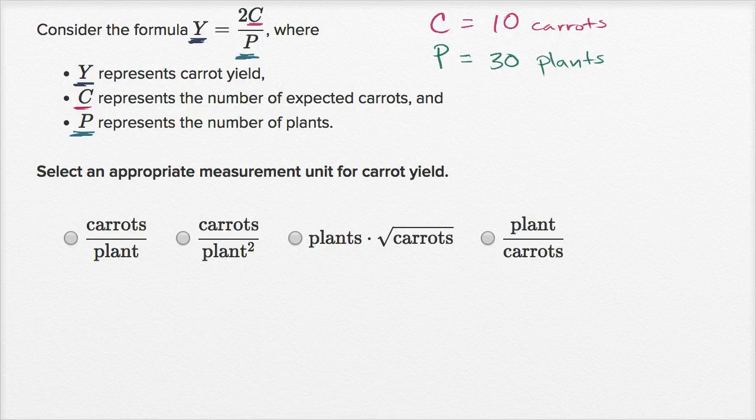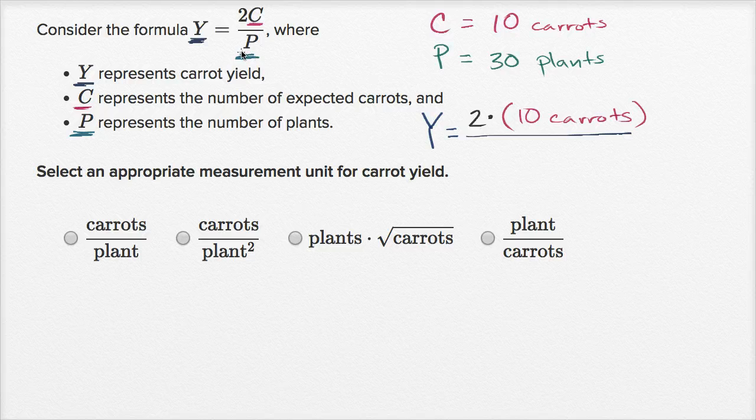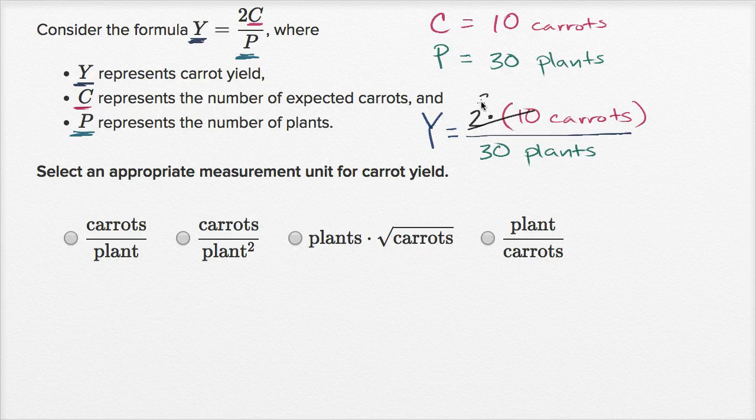And so using this formula, y would be equal to two times 10 carats divided by P, which for this case is 30 plants. And so two times 10 carats, that's going to be 20 carats.